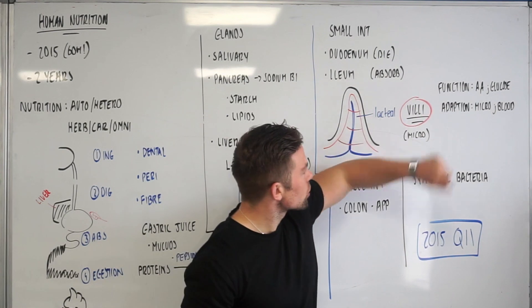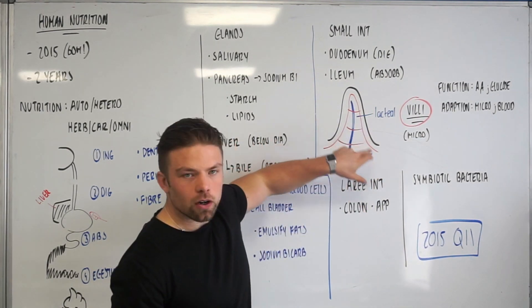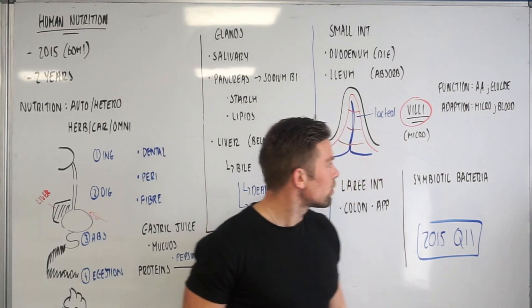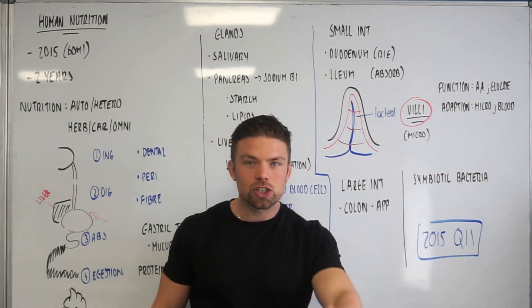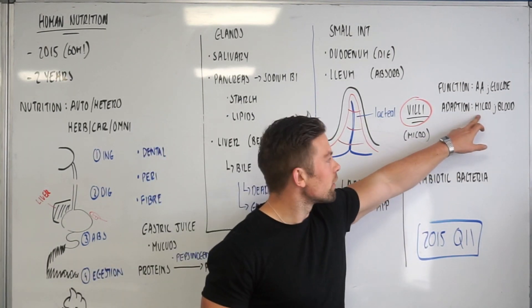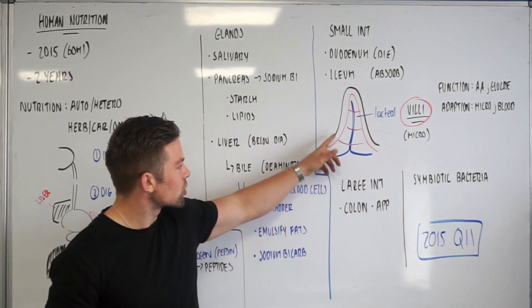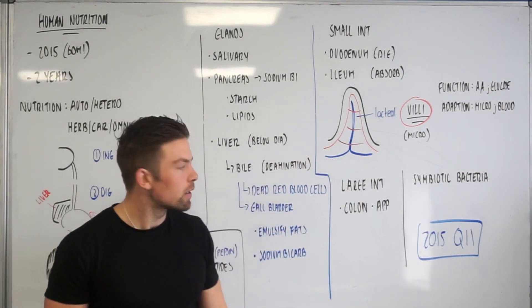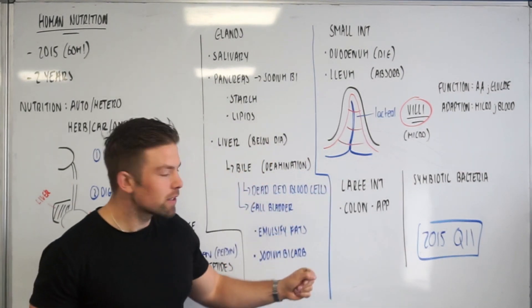And so we've got villi and microvilli. What are the functions of these villi? Well, they absorb loads of things, but I've just put two up here: amino acids and glucose. And what's their adaptation, which is an examiner's very good question? Well, they have loads of microvilli on them and they have a fresh blood supply. There's thin walls with lots of blood, similar to what we've seen in the alveoli.